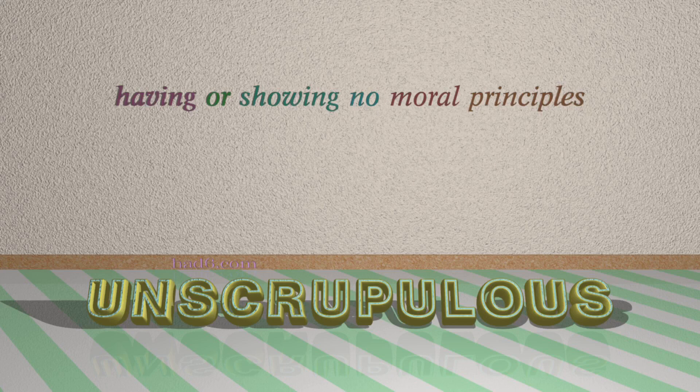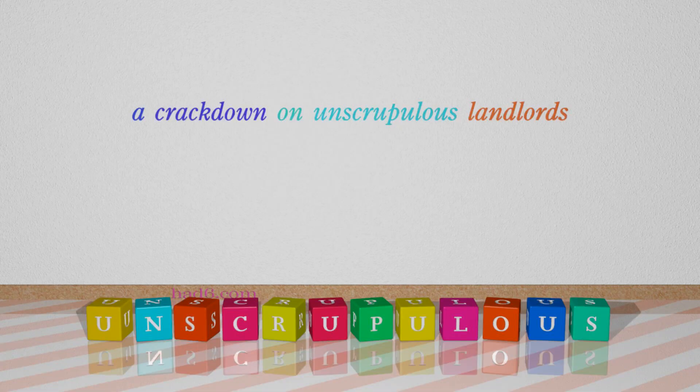Number 7: Unscrupulous. Which means having or showing no moral principles. For example: A crackdown on unscrupulous landlords.